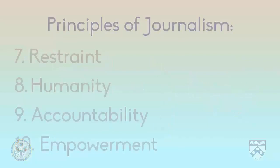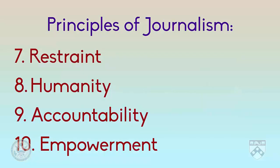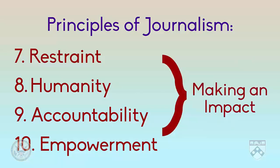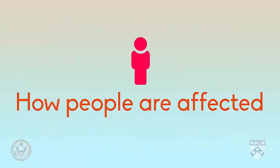The final four principles include restraint, humanity, accountability, and empowerment. These principles are about how journalism can impact people, meaning how people are affected by the articles that a journalist writes.